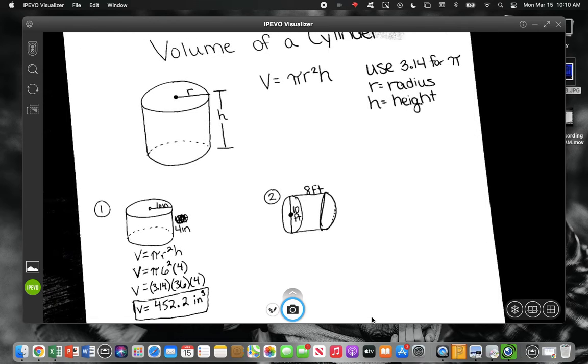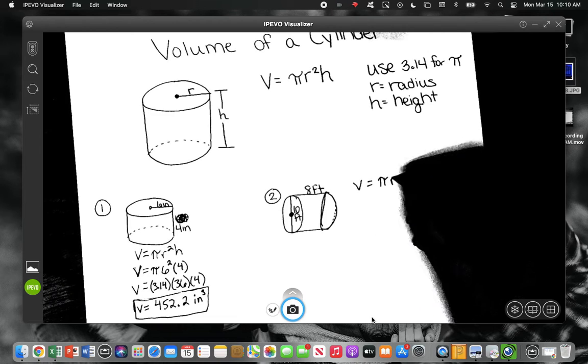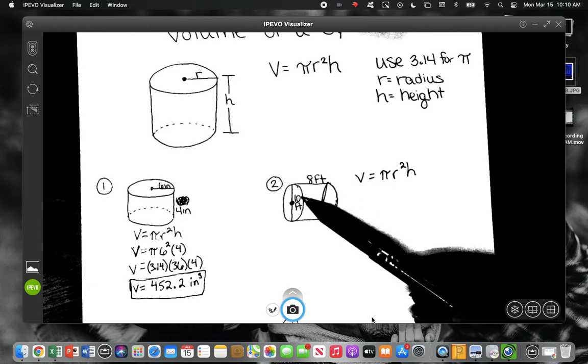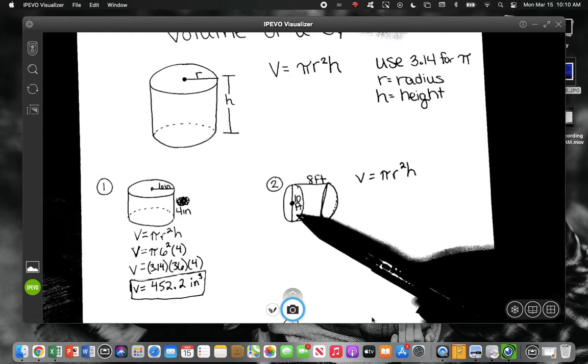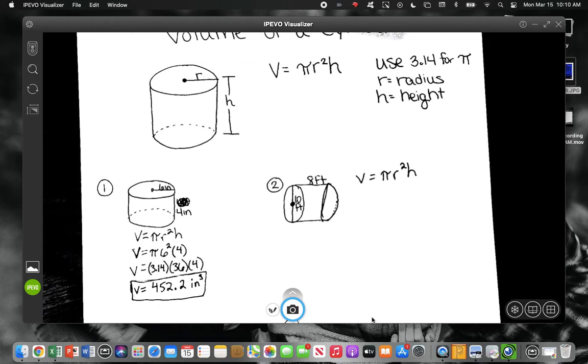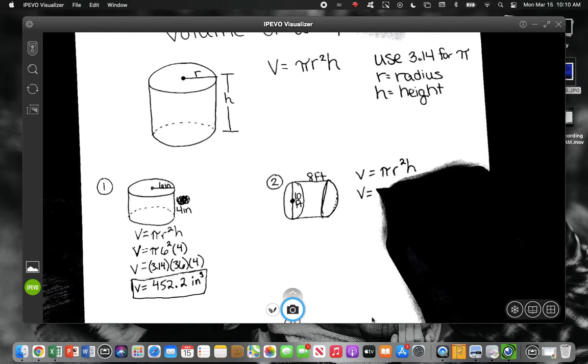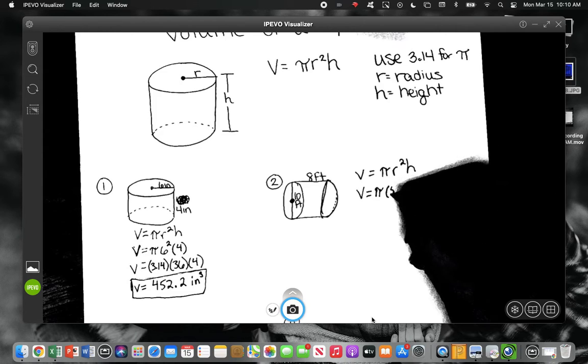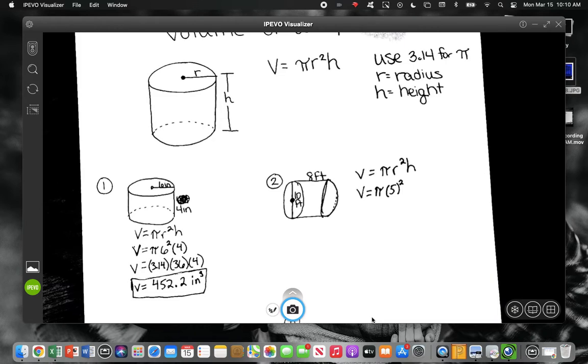Alright, so number 2. Number 2, look carefully at that. We have two pieces of information that we're given. We have 10 feet, but look, that looks like it's the diameter, not the radius. Right? We need the radius, so how are we going to find that? Divide by 2. Okay. So we're going to have π times what? What is the radius? 5. 5 squared. And then times the height. What's the height here? 8.